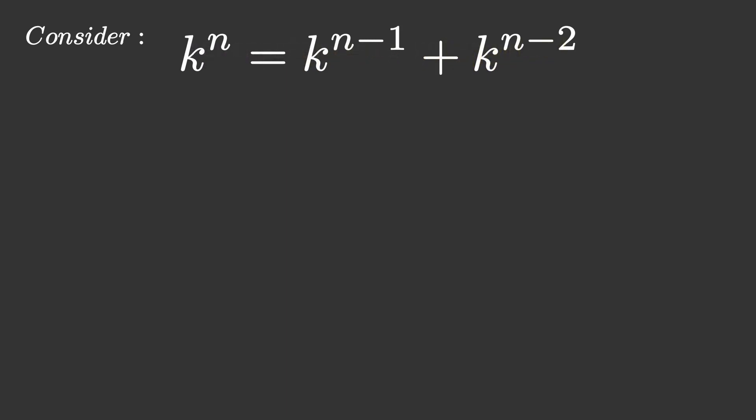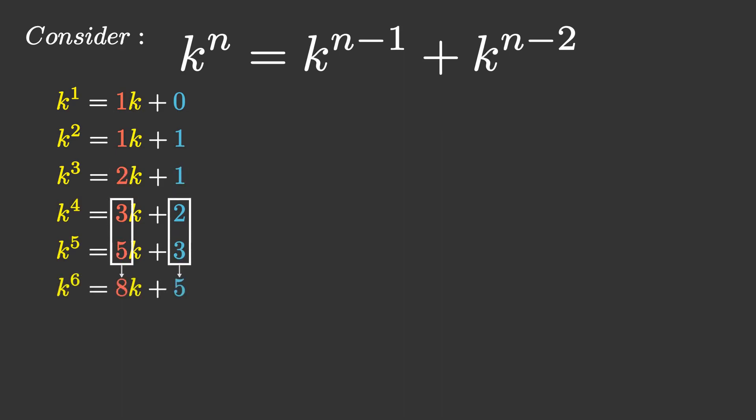We obviously know the terms for k to the 1 and k squared from earlier, but using the fact that the term for k to the n is the term for the previous one summed, we can add k to the one and k to the 2 together to get k to the 3, and as the terms collect, the coefficients combine and sum. Continuing this, we know that the coefficients of k will be the sum of the previous two coefficients, and the same for the constant term, which is the definition for the Fibonacci sequence, with the constant term slightly shifted because of the k to the 1 term.